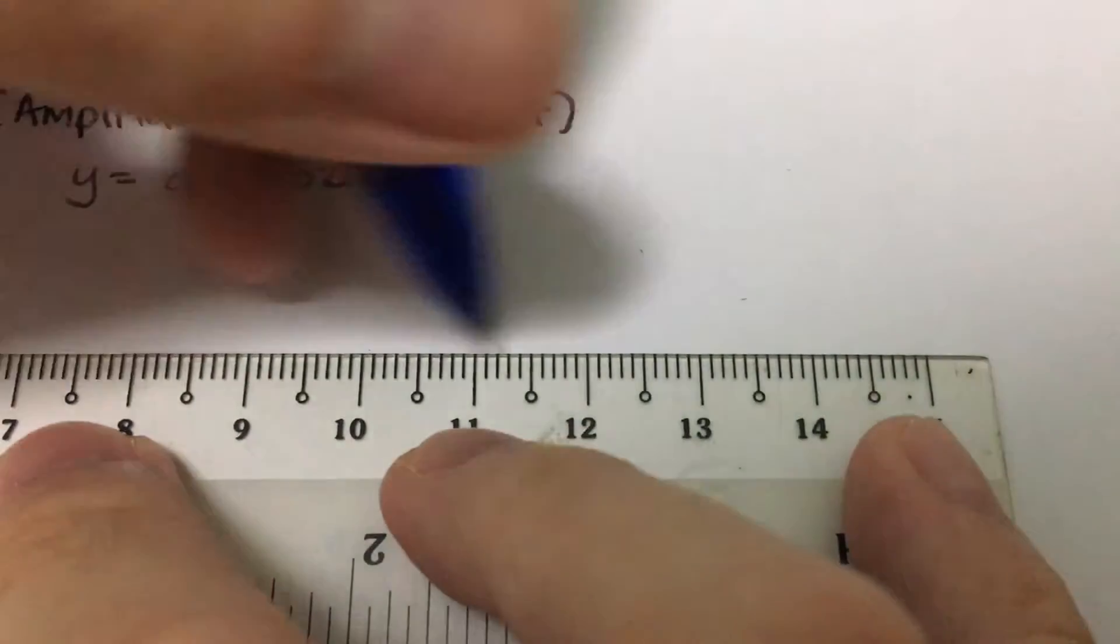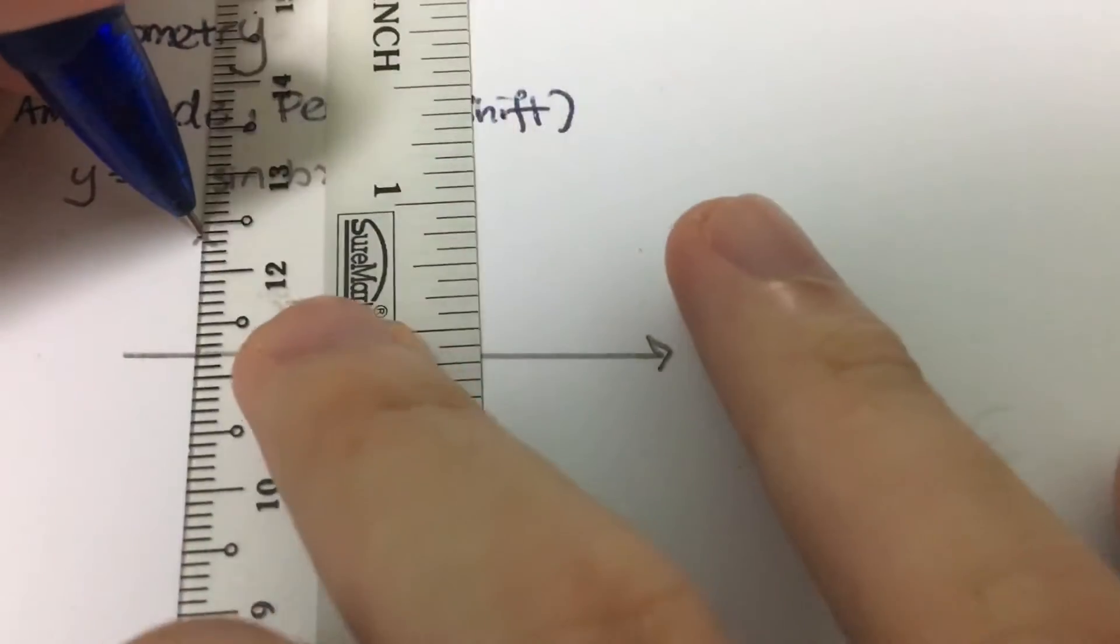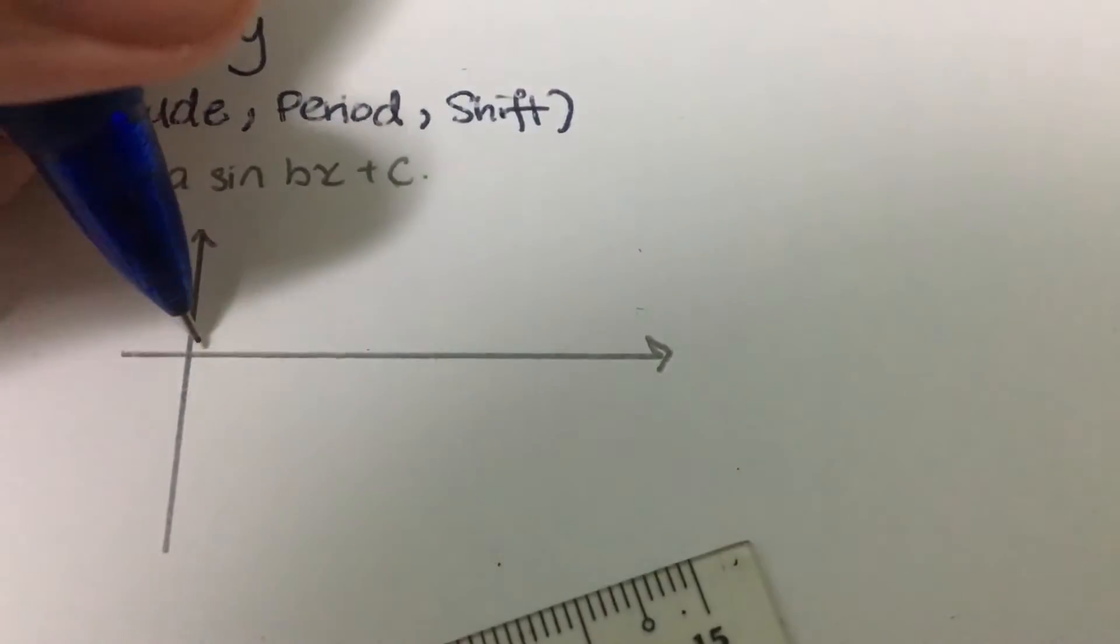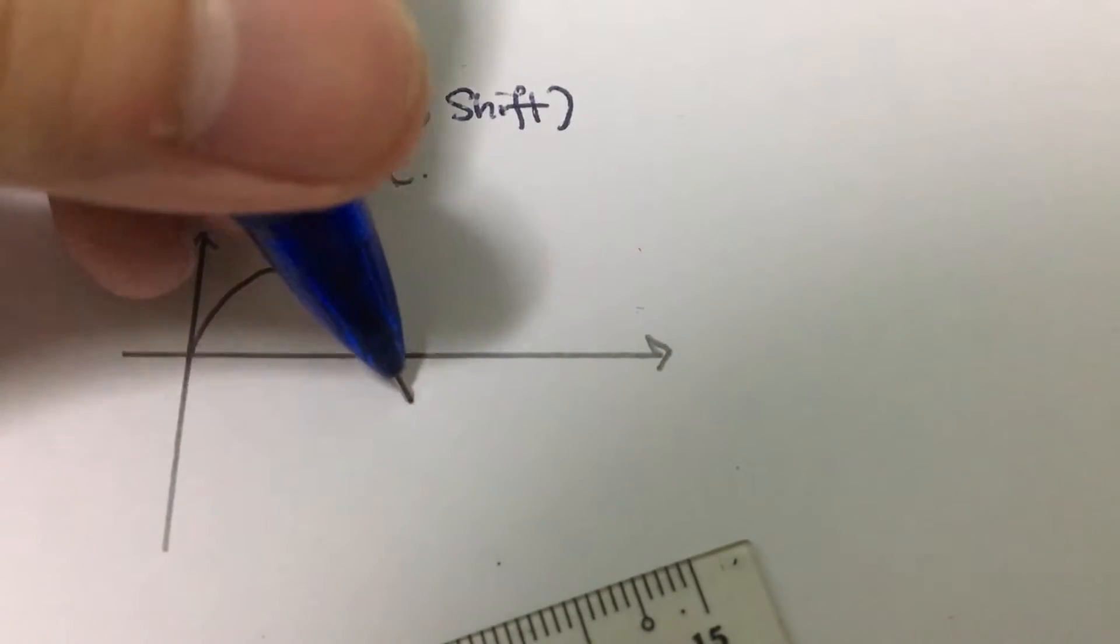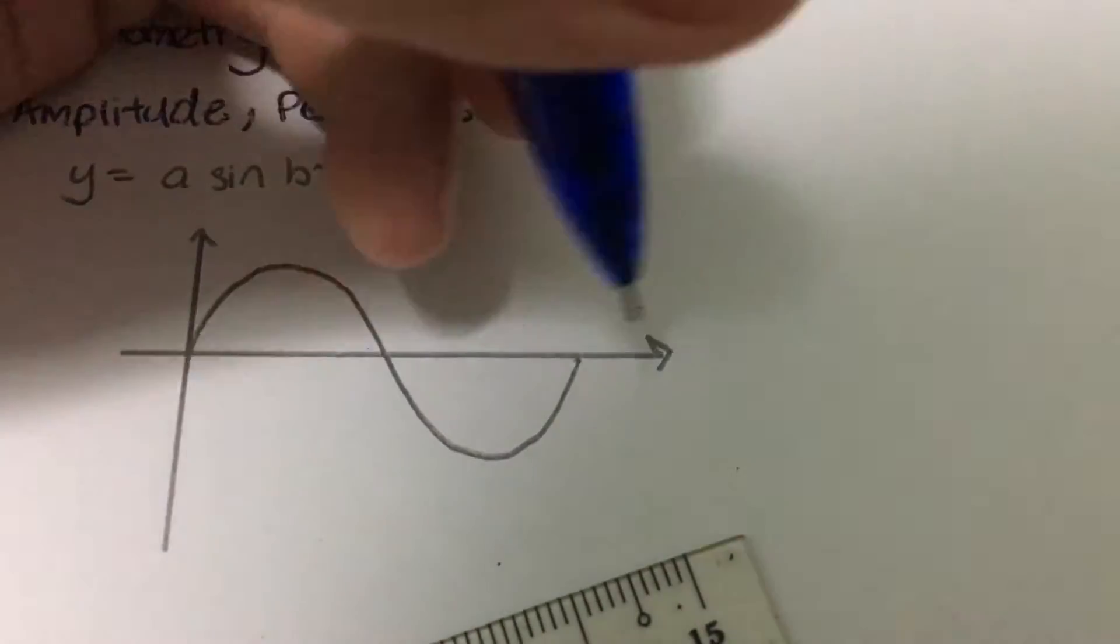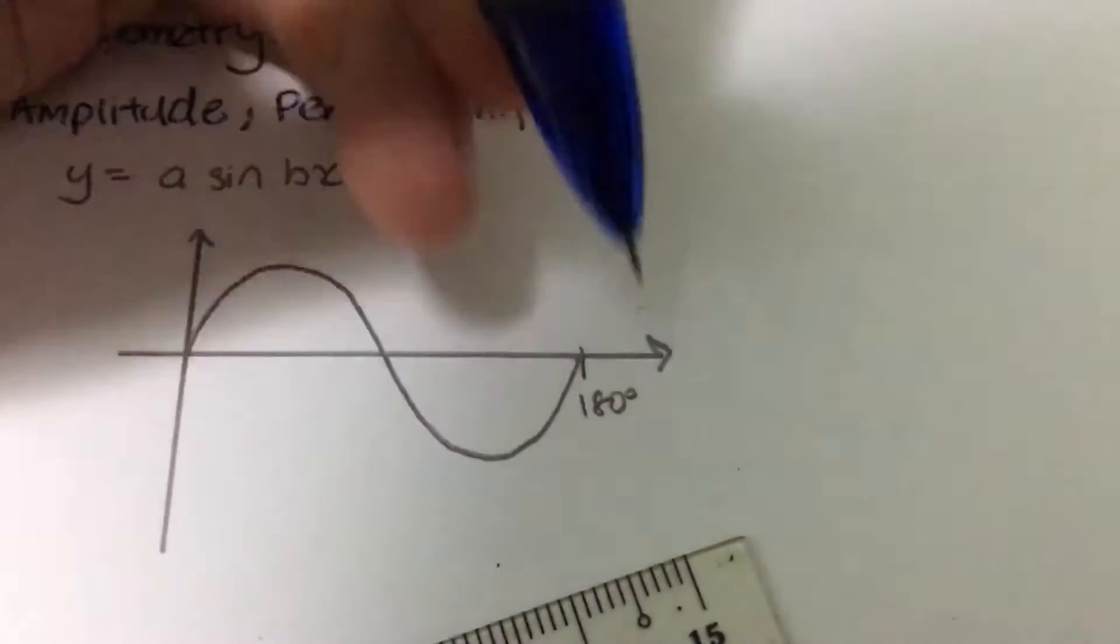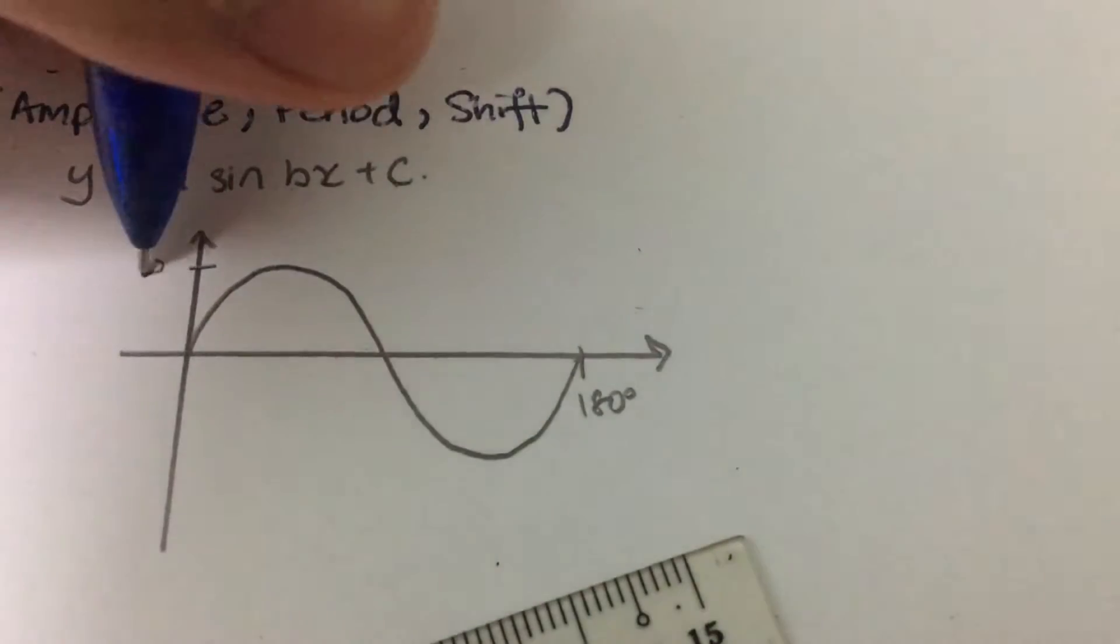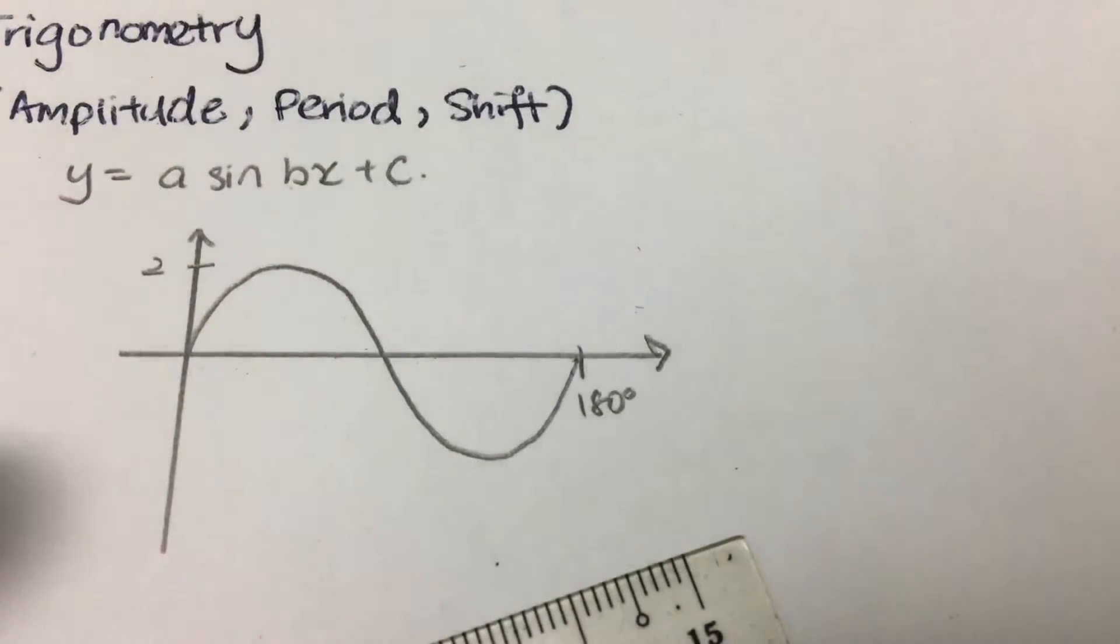So let's say this is a curve, and then you have this particular example and then you have this curve, this basic curve itself, and let's say this is 180 degrees and this is 2, and that's about it.